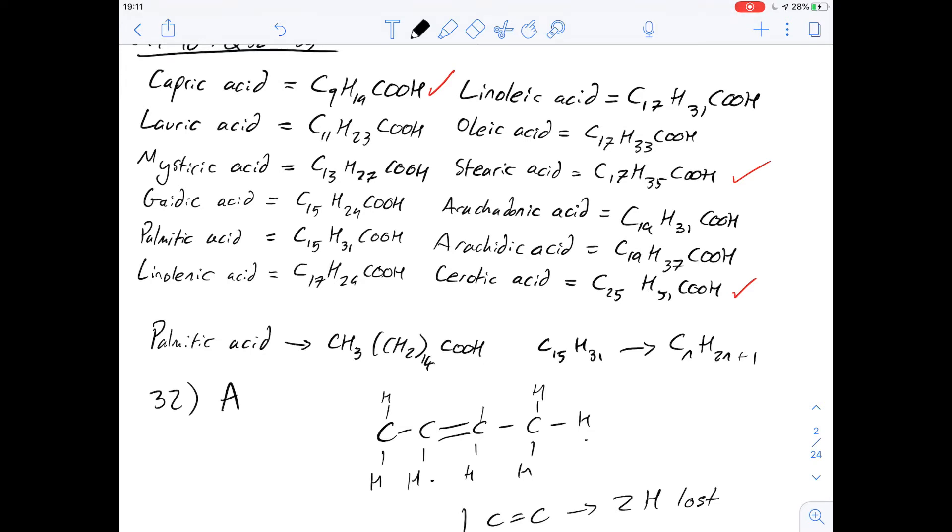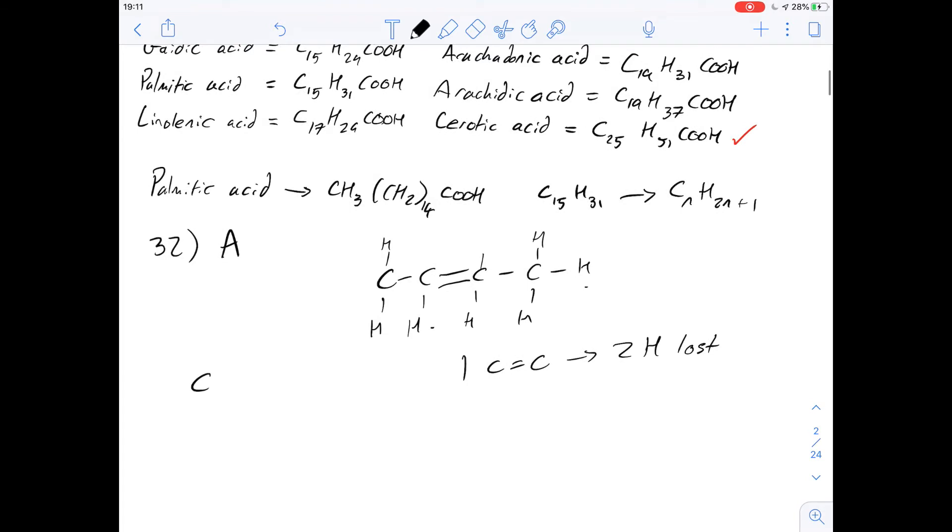So arachidonic acid, we're told here, is C19H31. If it were saturated we'd expect it to have 2 times 19 which is 38, plus 1, 39 hydrogens in it, which means it's lost 8 hydrogens. So using this we can say that there's going to be four carbon-carbon double bonds, and that's why the answer for this one is going to be D.